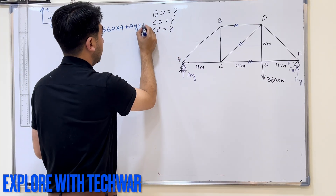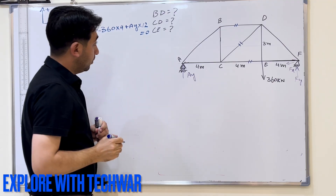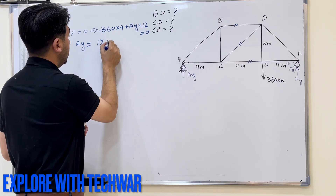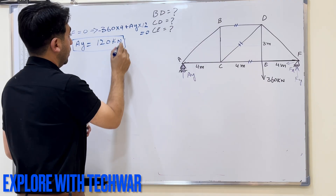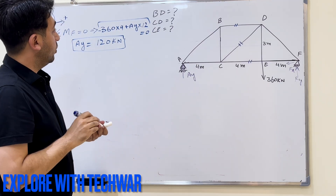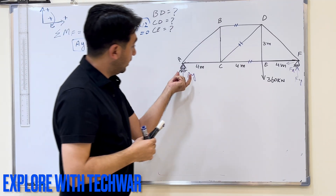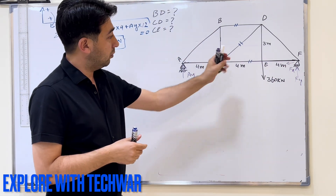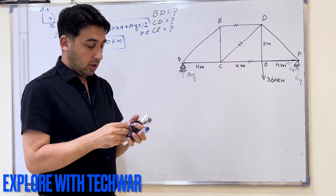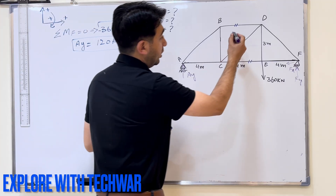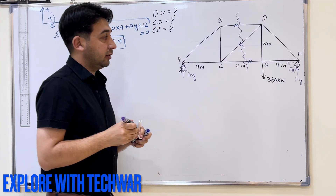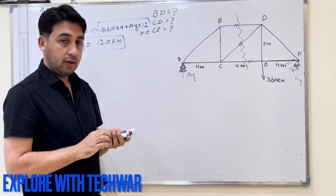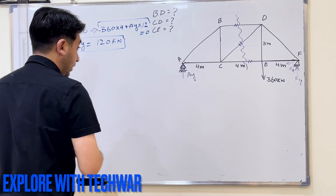The distance from F to A is 4 + 4 + 4 + 3 = 12 meters. Setting the equation to zero and solving, Ay equals 120 kilonewtons. We don't need Fy and Fx because we will take the left side of the truss for solving. So I will draw a section line through the members of interest — BD, CD, and CE — and redraw the left side of the truss.